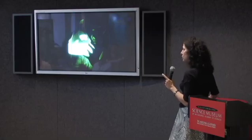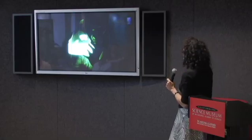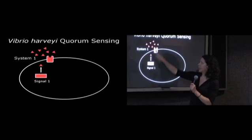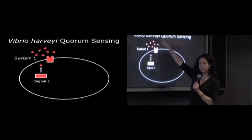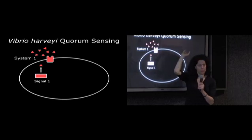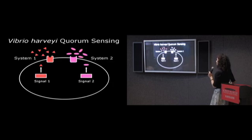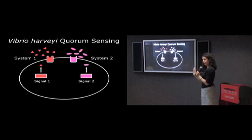We started working on this relative Vibrio harveyi, doing these tricks, just looking for bacteria that made light at the wrong times. What we found out was that this bacterium had quorum sensing, but it was a more sophisticated system than the Vibrio fischeri system. What we found was that indeed, the bacterium had an enzyme that made a species-specific molecule and the partner receptor was there.